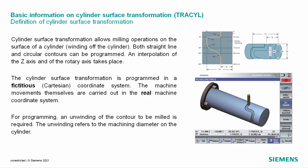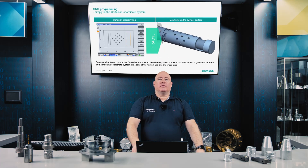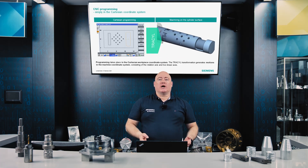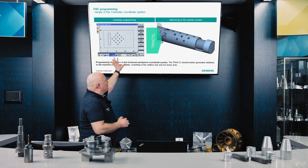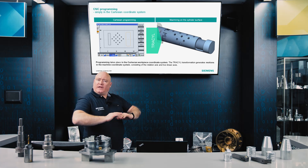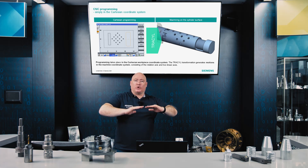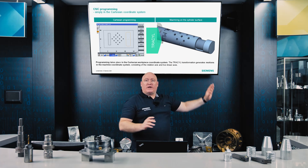Cylinder Surface Transformation, also called TRAS-CIL, from Transformation Cylinder, involves drilling and milling operations on the peripheral surface of a cylindrical body in the form of a cylinder surface unwinding process. TRAS-CIL is programmed in the Cartesian workpiece coordinate system, which means that the programming for pockets, slots, and also drill holes is planar in the conventional way in one plane, with the control then applying the projection on the cylinder surface.